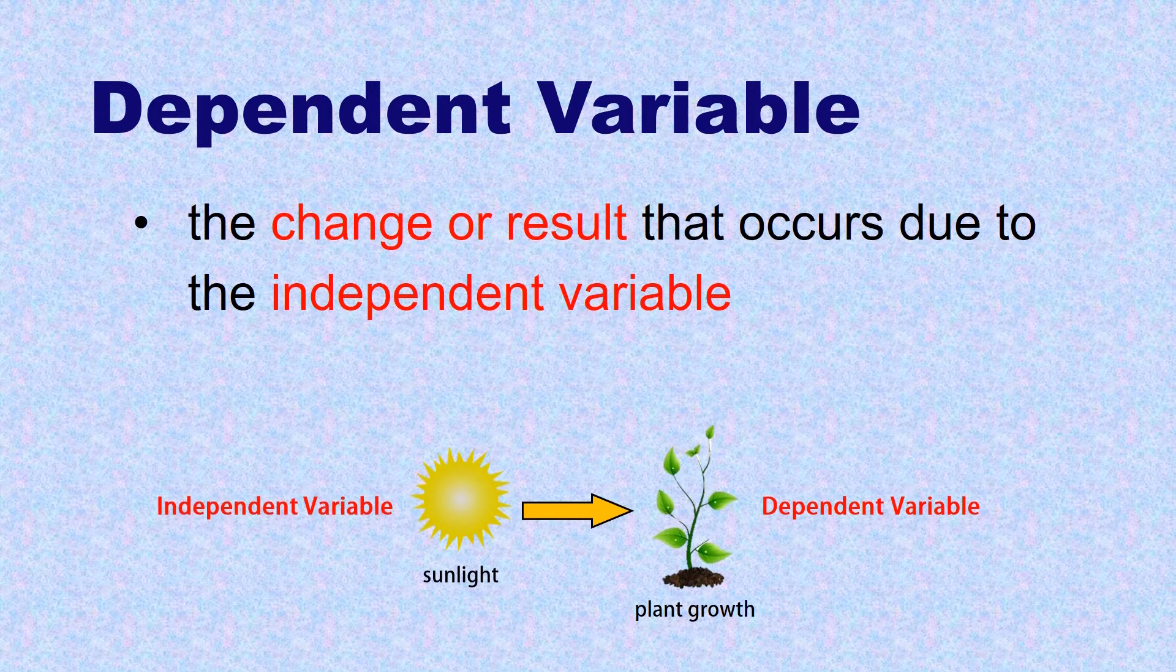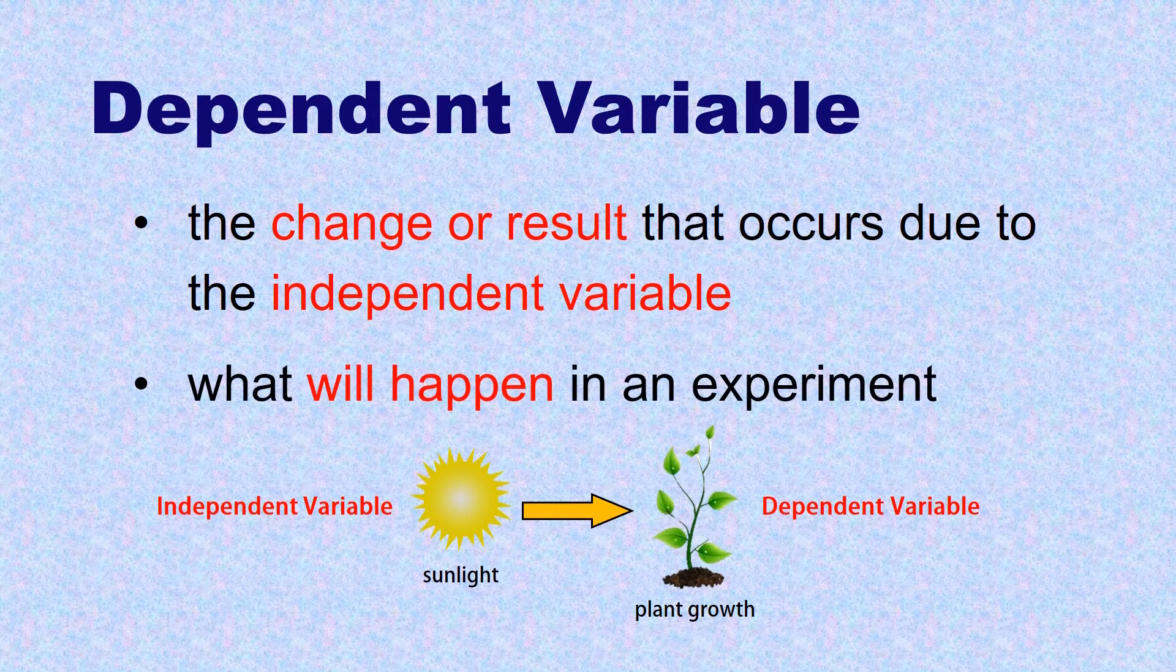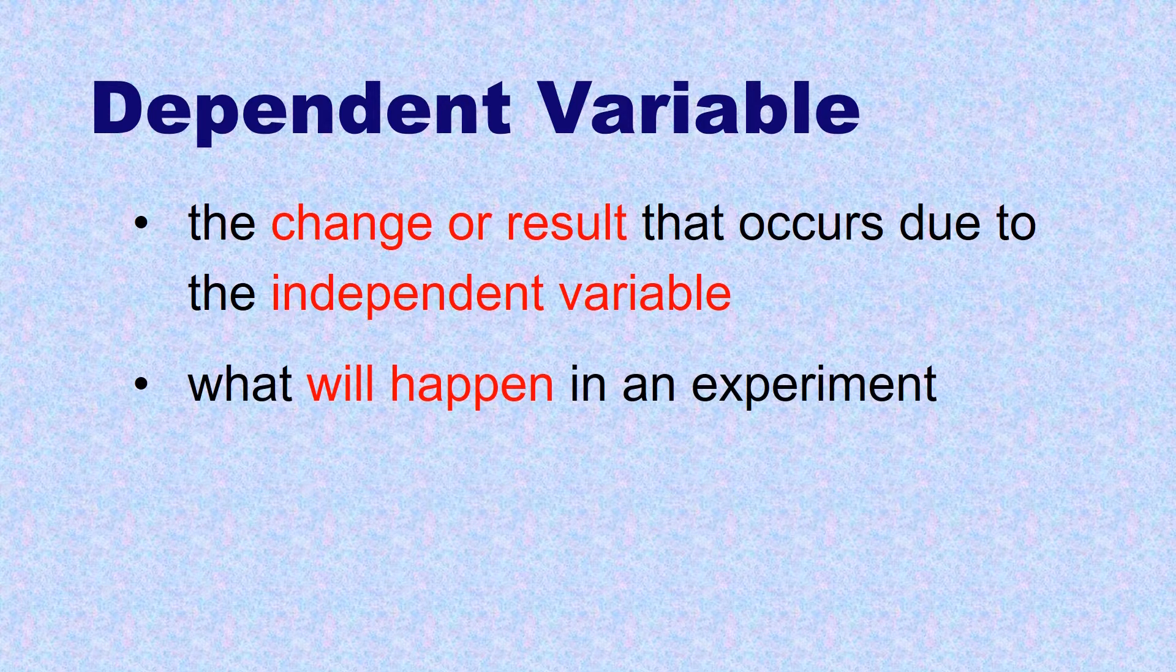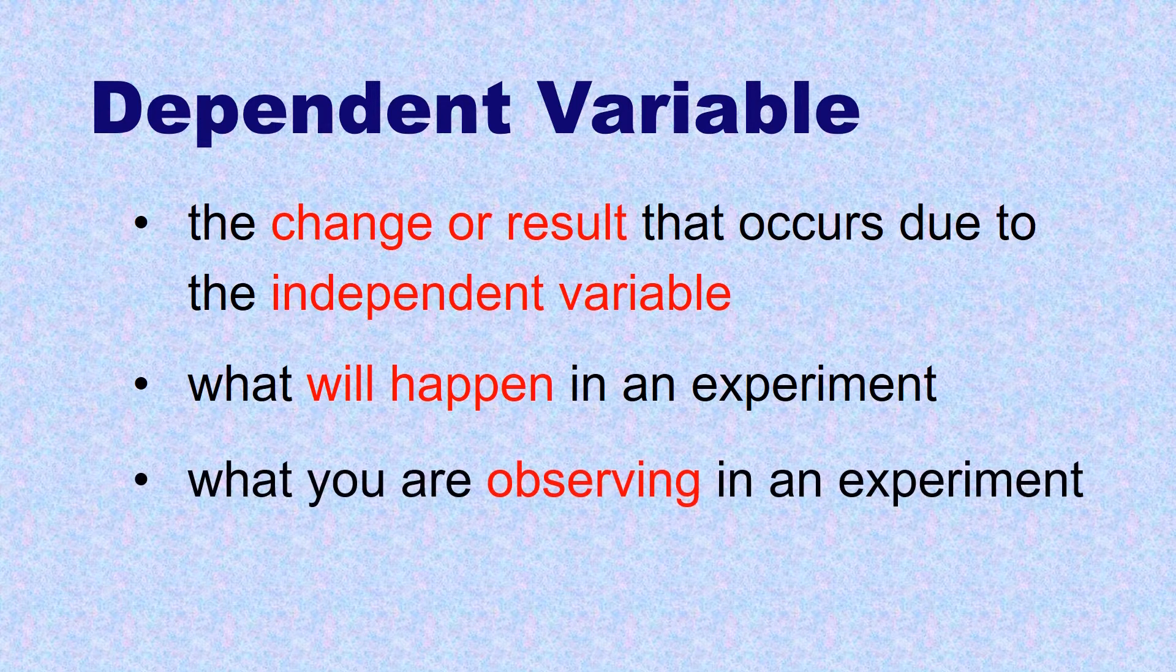Also, dependent variable is what will happen in an experiment. Dependent variable is what you are observing in an experiment. For example,